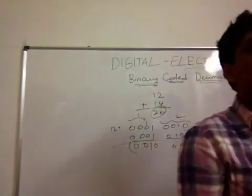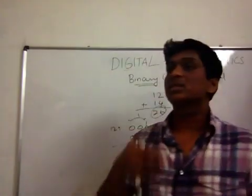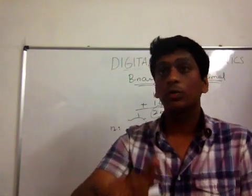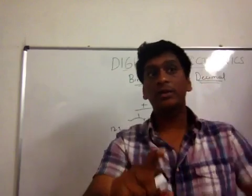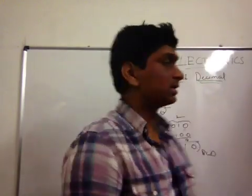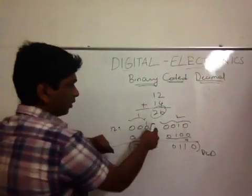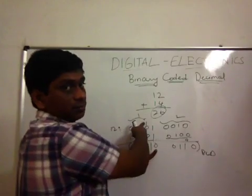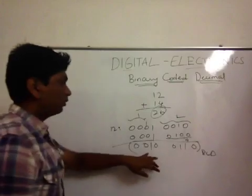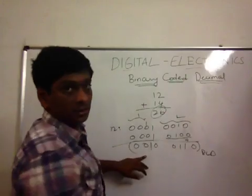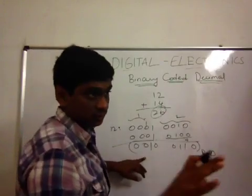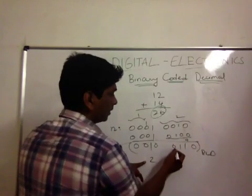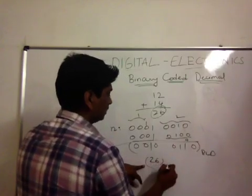Going through the addition: 0 plus 0 is 0, 0 plus 1 is 1, 1 plus 0 is 1, 1 plus 1 — you write 0 down and carry 1. Then 1 plus 1 again gives 0 with a carry of 1. If you convert the result back to decimal for verification, it gives 2 and 6, confirming the answer is 26.